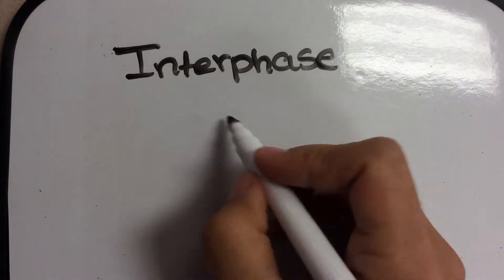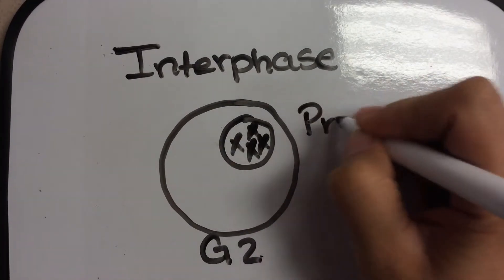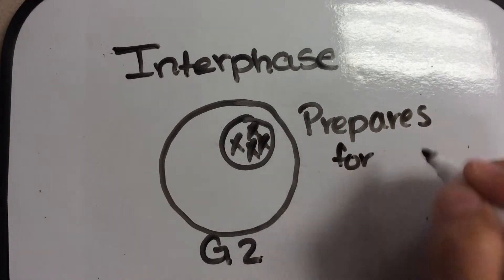The next phase is G2. Now, this big cell is going to prepare for mitosis. Mitosis is where the cell actually divides.